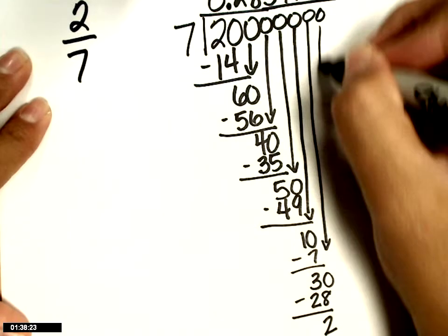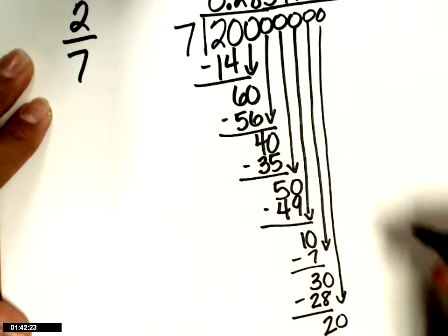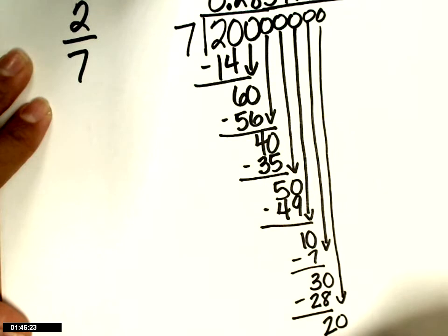Add a 0. Bring it down. Oh, it looks as though I'm going to start repeating. 7 times 2 is 14. That's 6.